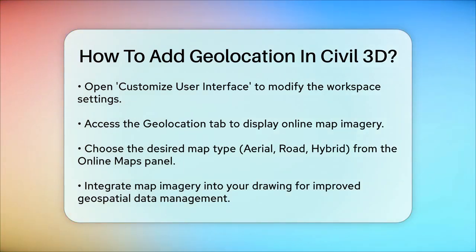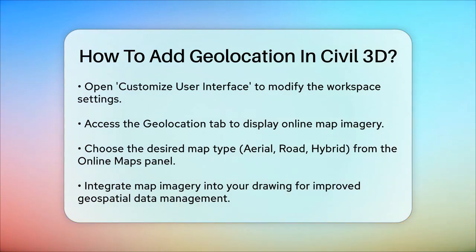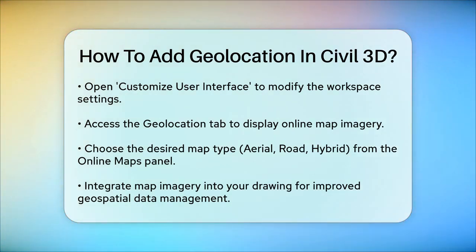To display the maps, go to the Geolocation tab, select the Online Maps panel, and choose the type of map you want to display, such as Map Aerial, Map Road, or Map Hybrid. This will integrate the map imagery into your drawing, making it easier to work with geospatial data.